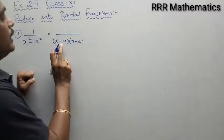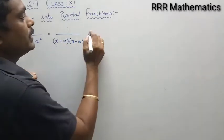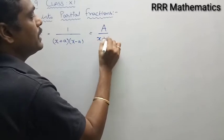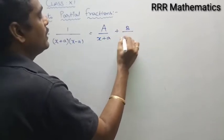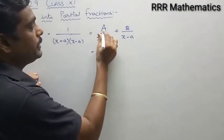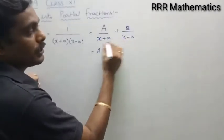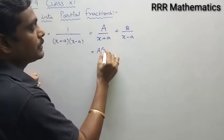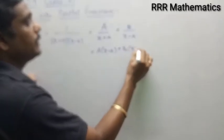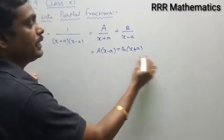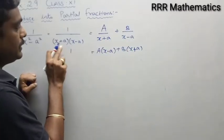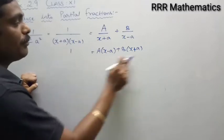Here I have linear factors, so I want to write some constant capital A divided by x plus a and some other constant capital B divided by x minus a. Taking the LCM, the numerator becomes A times x minus a plus B times x plus a, and the denominator is the product of x plus a and x minus a.